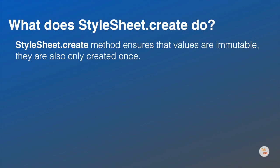Next question is: What does StyleSheet.create do? The StyleSheet.create method ensures that values are immutable and are only created once. Immutability is a concept that React programmers need to understand. An immutable value or object cannot be changed, so every update creates a new value, leaving the old one untouched.